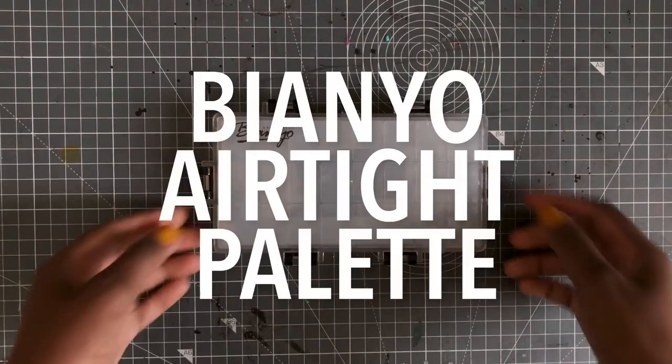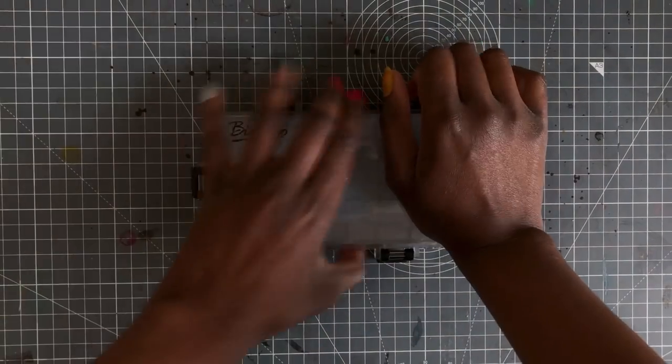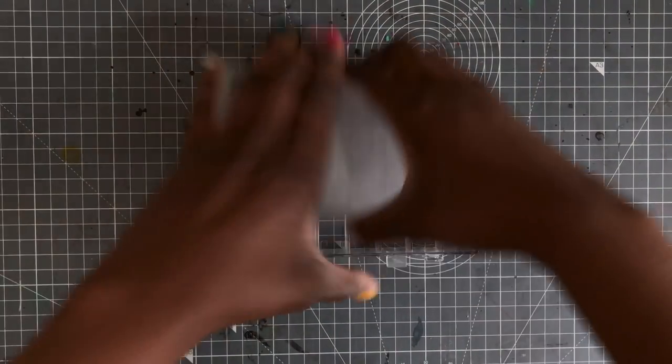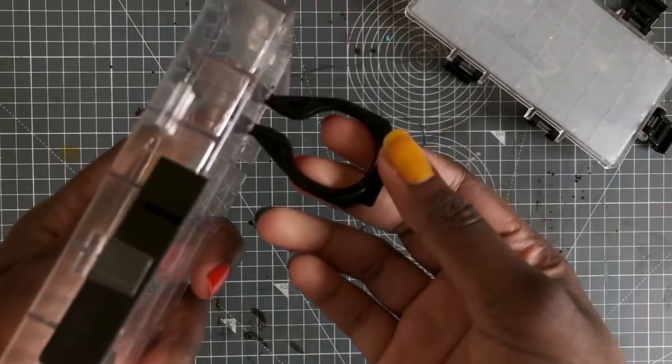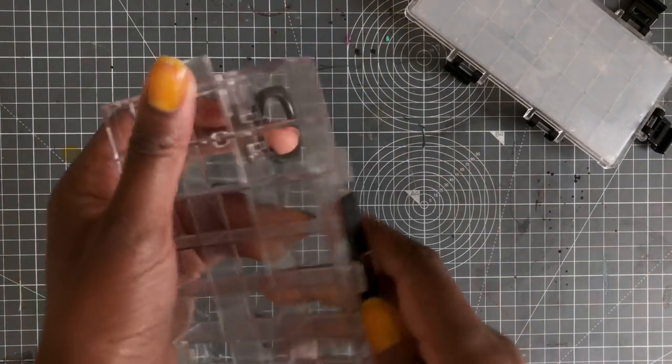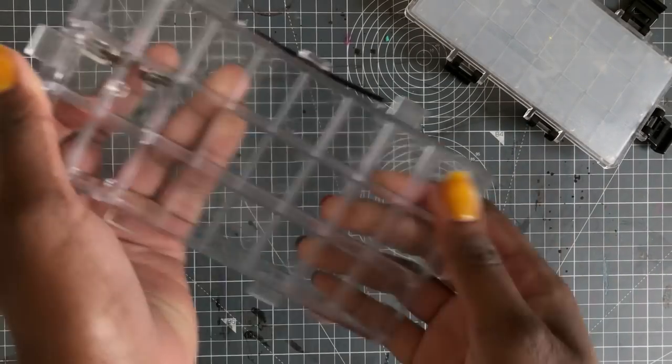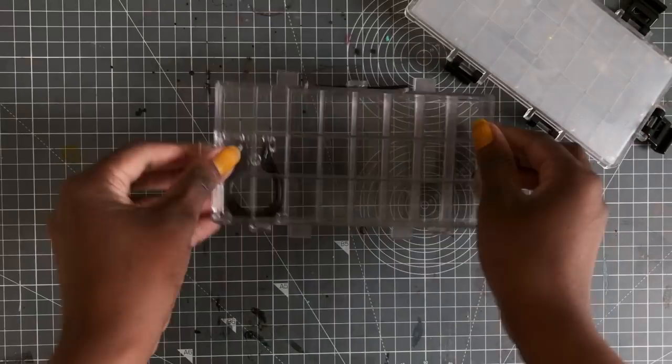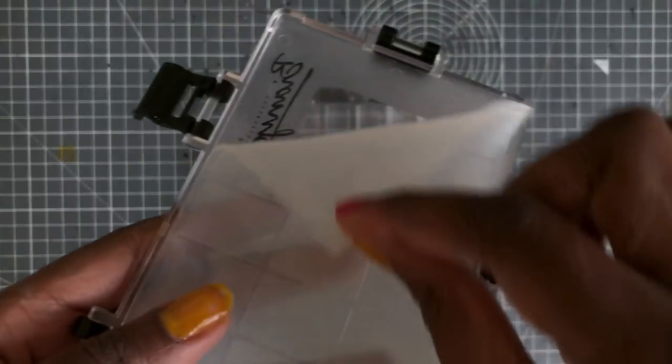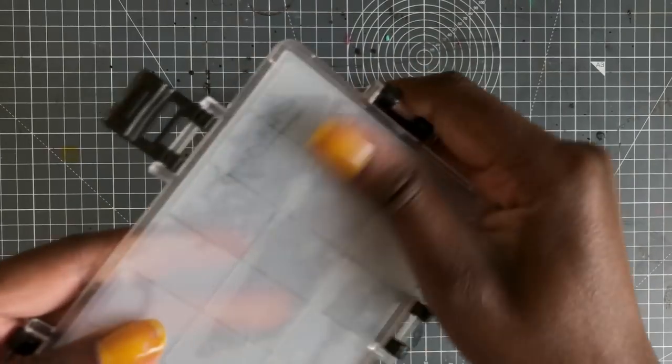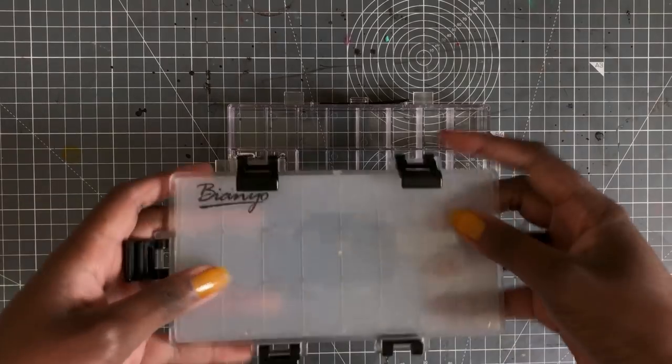So building on that, I got the Biagno airtight palette. I think this comes under several different brands but this is the one that I got because it's the one with the silicone on top and that keeps everything really nice and tight. It's pretty small for the 24 wells but it's really great for plein air painting or if you just don't have a lot of space. The Biagno palette can be a little difficult to open and close if you have some problems and the plastic feels pretty flimsy so I'm a little worried about it breaking but it hasn't broken on me yet.